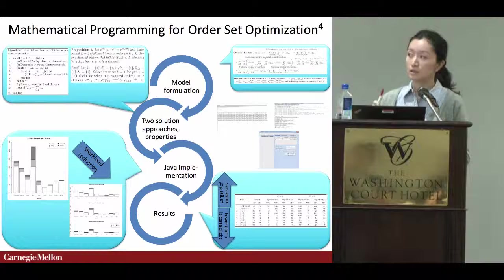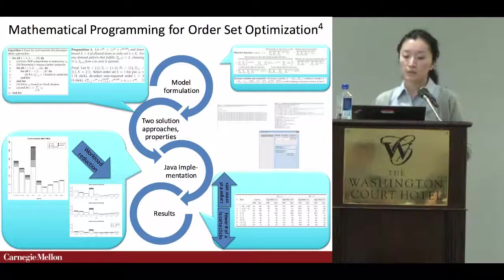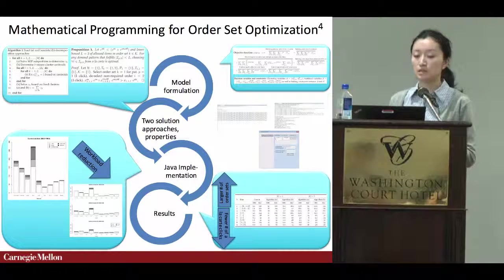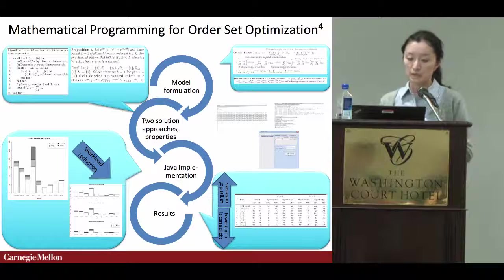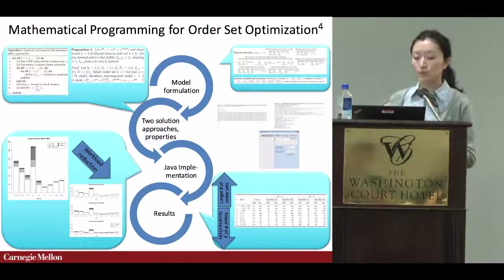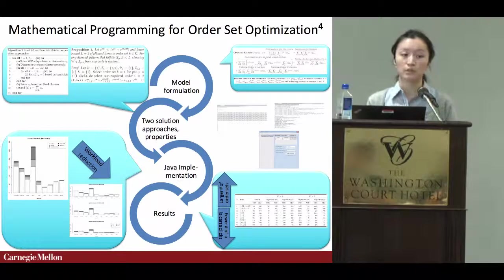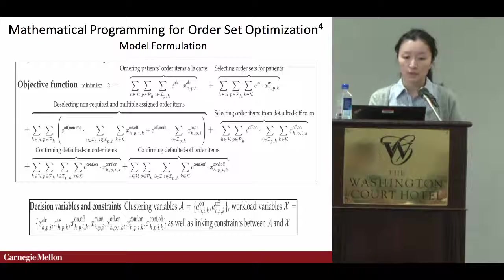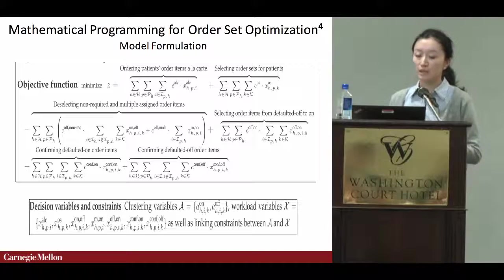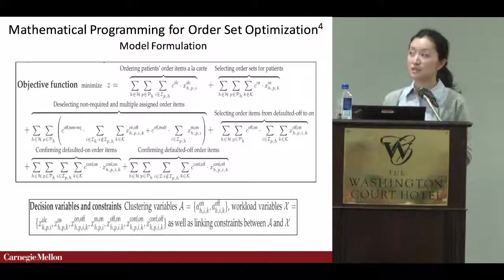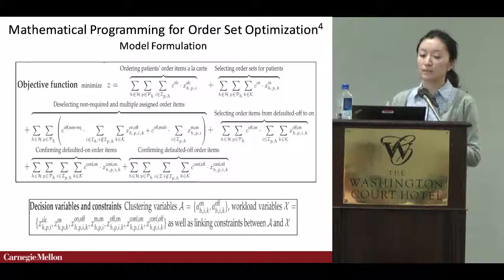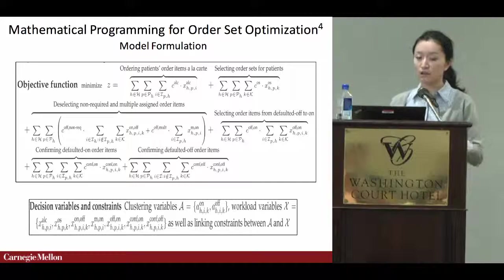Order set is a critical function of CPOE systems. Like an Amazon bundle, they group similar and relevant orders together so physicians placing multiple orders can do so with one or two simple clicks. They are expected to improve efficiency by reducing physical and cognitive workloads and improve patient safety by supporting clinicians with complex orders and hospital guideline compliance. However, physicians are not using order sets much, potentially because they don't match current workflow, so physicians resort to choosing à la carte individual orders.